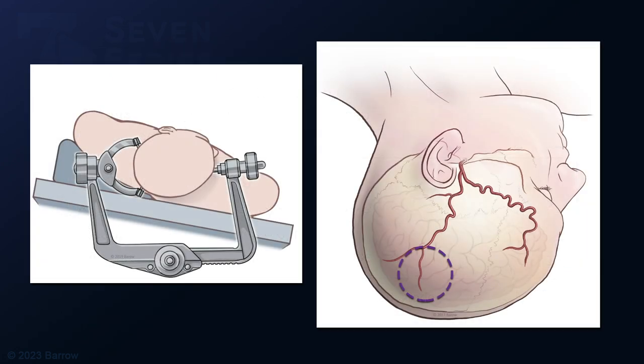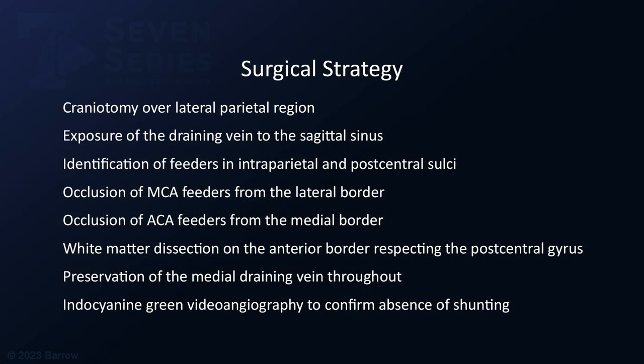Here is an illustration showing the patient position and the location of the AVM. Surgical strategy consisted of a craniotomy over the lateral parietal region, exposure of the draining vein to the sagittal sinus, identification of feeders in the interparietal and post-central sulci, occlusion of MCA feeders from the lateral border, occlusion of ACA feeders from the medial border, white matter dissection along the anterior border respecting the post-central gyrus, careful preservation of the medial draining vein throughout the dissection, and after resection, indocyanine green videoangiography to confirm absence of shunting.